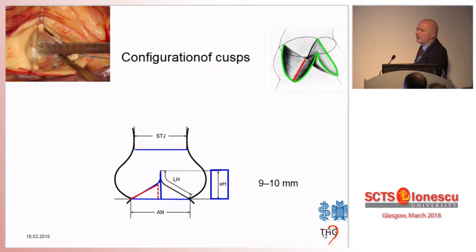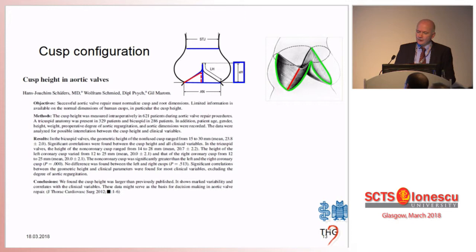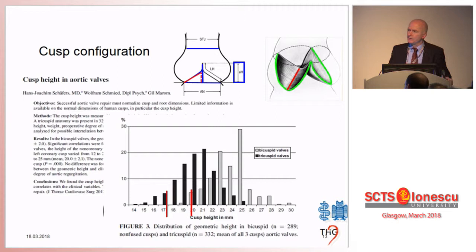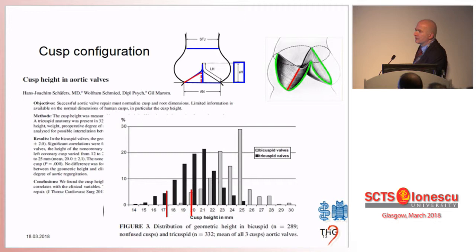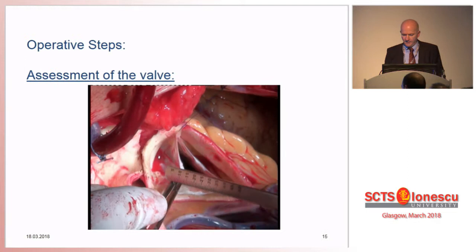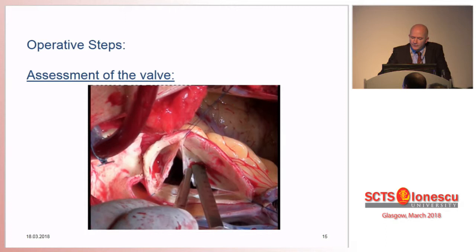Let's assume the cusp is normal. We can use effective height, which will directly correlate with prolapse or no prolapse. If we have a retracted cusp, this will have an effect also. What is normal height? There was very little data in the literature, so we measured 600 aortic valves — bicuspid and tricuspid. For the tricuspid, a normal geometric height is 20 millimeters. So geometric height is information we can use to determine whether we have a good substrate.